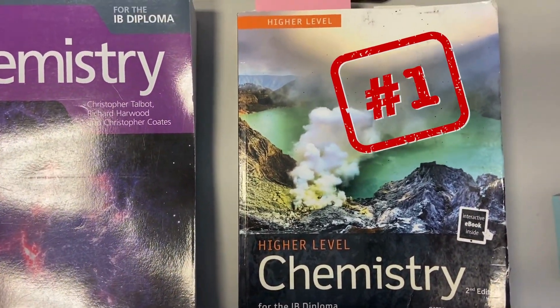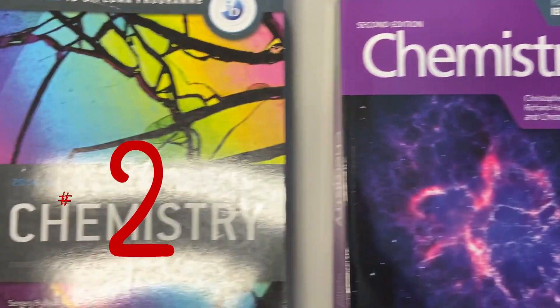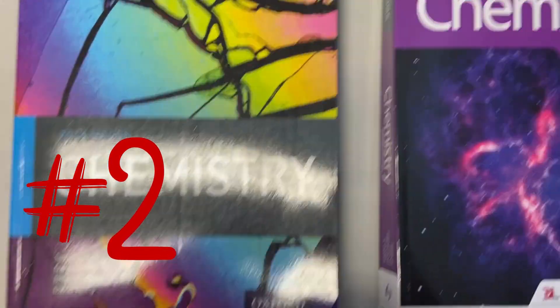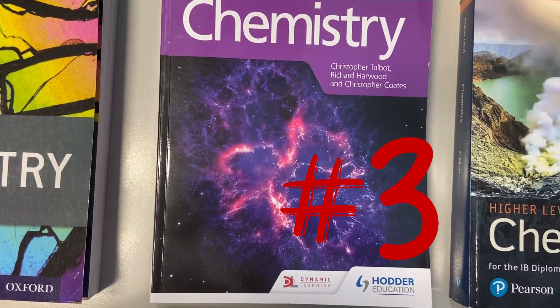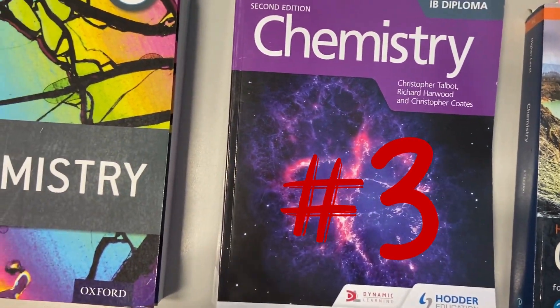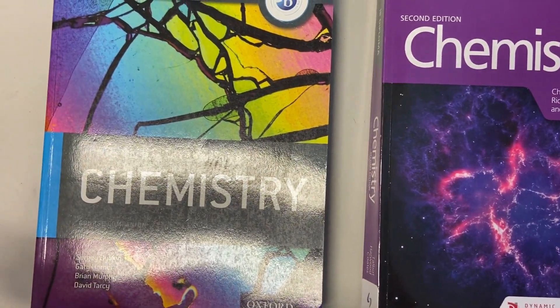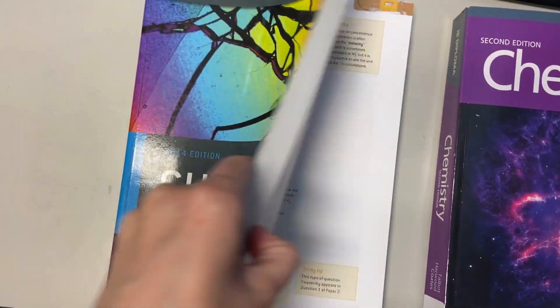Pearson is your best option, your second best option is the Oxford textbook, and the third, if you had to go with something and you don't have access to Pearson or Oxford, would be the Hodder Education. I'll give you a little bit of information as to why.